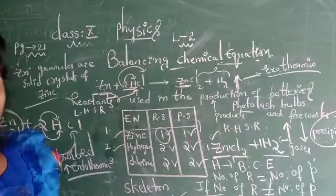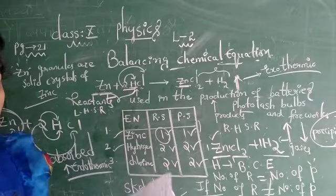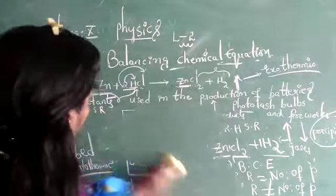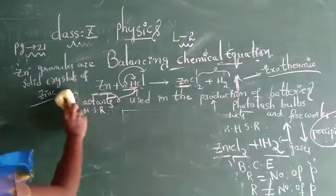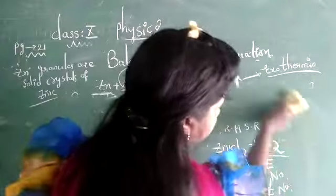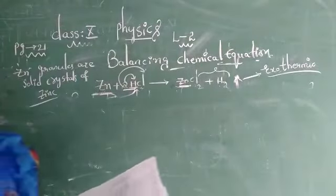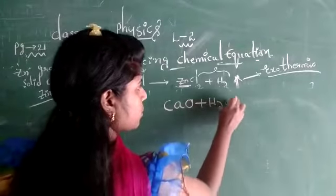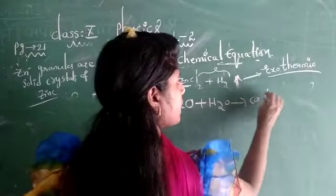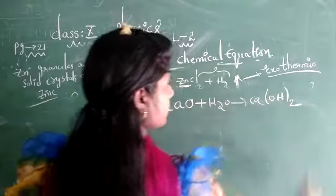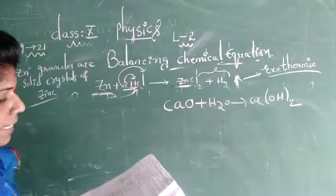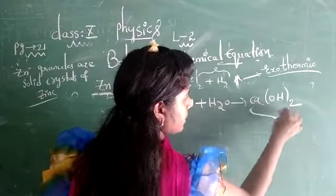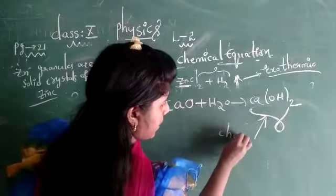When calcium oxide reacts with water, a new substance is formed. Calcium oxide (CaO) plus water (H₂O) gives rise to calcium hydroxide Ca(OH)₂. This is the same concept seen in activity one. Whenever we obtain a new product, this type of reaction is said to be a chemical change.